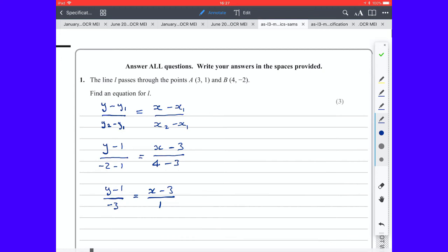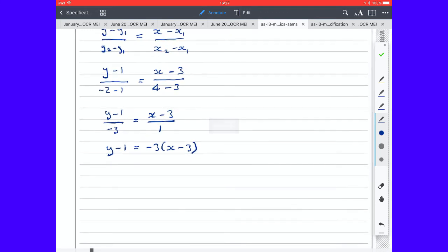So now I'm going to multiply this equation through by -3. And I get y - 1 equals -3 times (x - 3). Multiply out the bracket. y - 1 equals -3x plus 9.